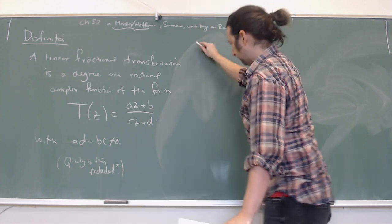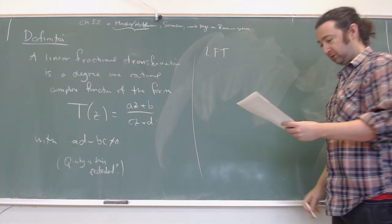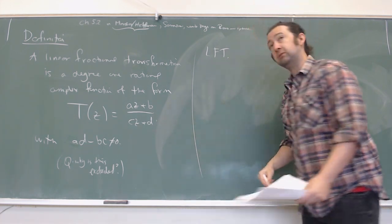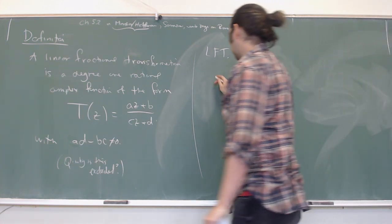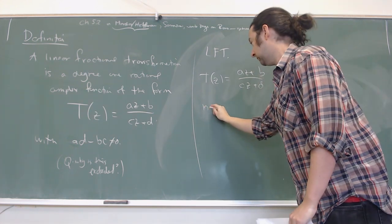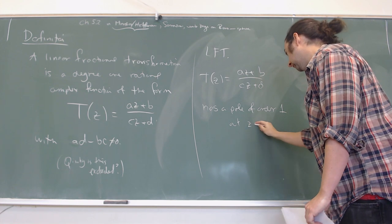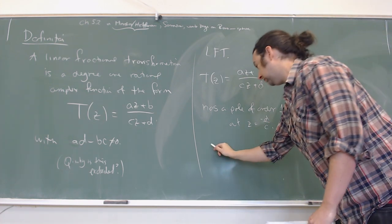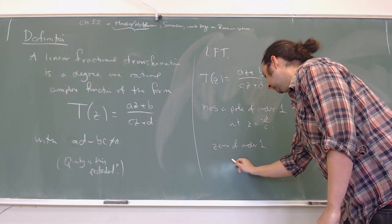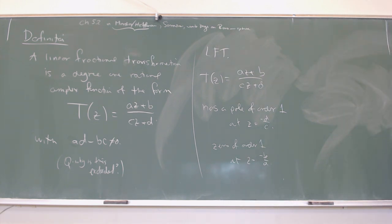It's often shorter just to write LFT for linear fractional transform, especially when writing on the board. Linear fractional transforms are complex functions of degree one: T(z) = (Az + B) / (Cz + D). They have a simple pole — a pole of order one — at z = −D/C, and a zero of order one at z = −B/A. The function is analytic everywhere except at its pole, and these are the basic building blocks of conformal maps.